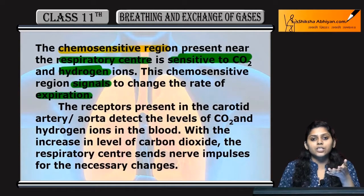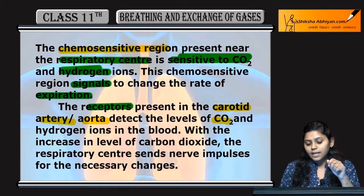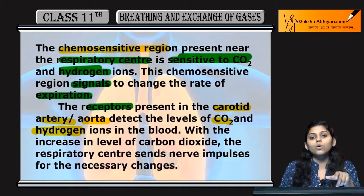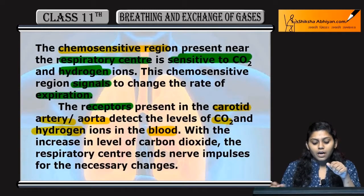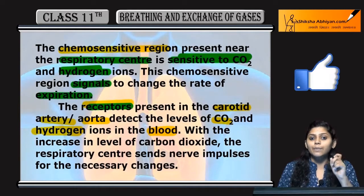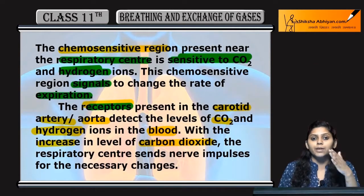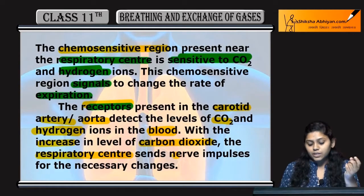Kuch chemo-sensitive receptors present hote hain carotid artery aur aorta mein, jo detect karte hain CO₂ and hydrogen ions ke level ko in the blood. With increase in level of CO₂, ye jo respiratory centers hain, ye nerve impulses bhejte hain.